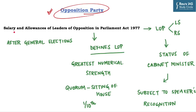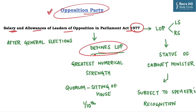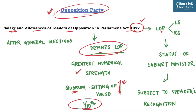After every general election, the question of formally recognized opposition party and leader of opposition arises, dealt under the Salary and Allowances of Leader of Opposition in Parliament Act, 1977. This act defines the leader of opposition as the member of the house who is the leader of the party in opposition to government having the greatest numerical strength, recognized as such by the Chairman of Council of States or the Speaker of the House of People. The condition for recognition is that a party or group should have at least one-tenth of the total members of the house. The 1977 Act extends leader of opposition to both Lok Sabha and Rajya Sabha and provides them the status of cabinet minister, subject to the Speaker's recognition in case of Lok Sabha.